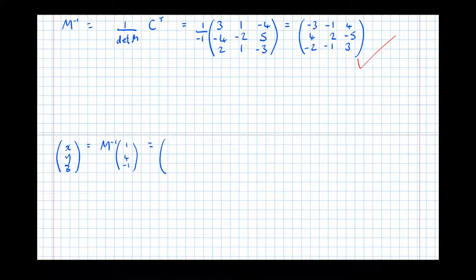Equals the inverse of M, so -3, 4, -2, -1, 2, -1, 4, -5, 3, times 1, 4, -1, gives me, okay well -3 times 1, so that's -3, take 4, take another 4. So -3 take 4 take 4 is -11. Second one, so 4 add 8 is 12, add 5 is 17. And then third one, -2 minus 4 is -6, minus another 3 is -9.